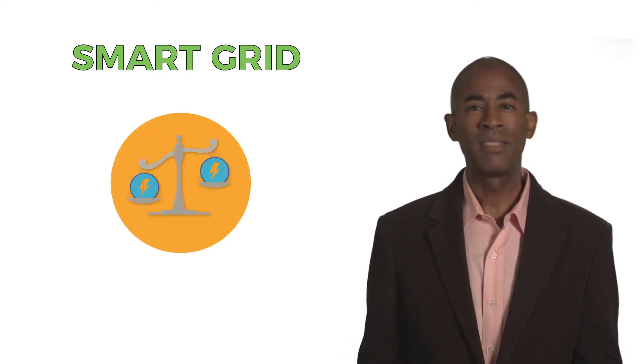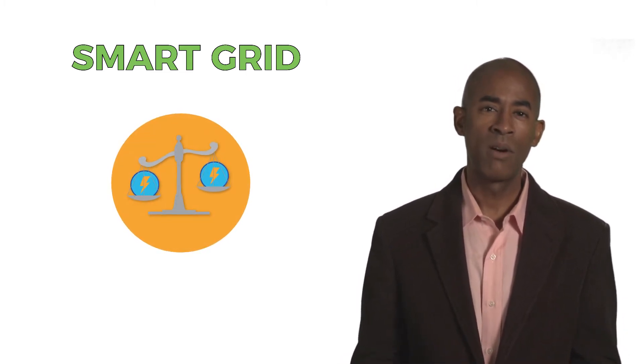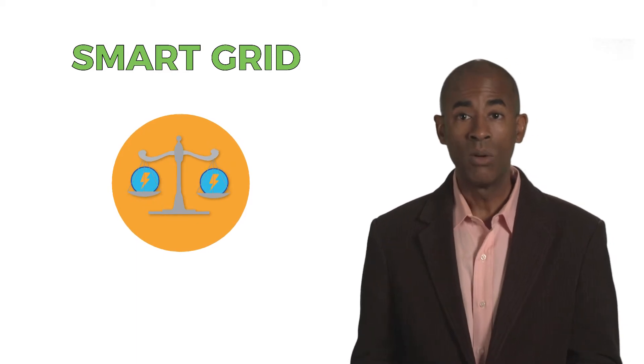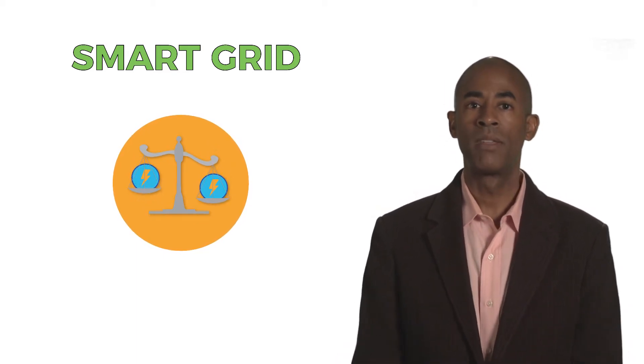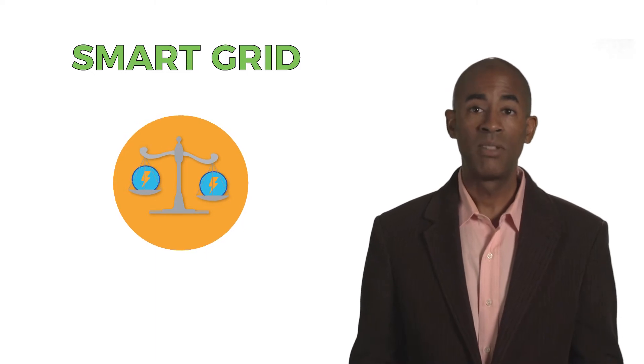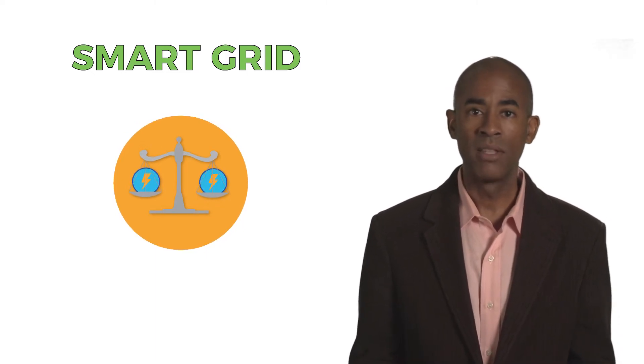It's a complex balancing act because the total amount of power on the grid needs to equal the total usage of power at any given time. The smart grid keeps the two sides of this equation in balance. This prevents outages or oversupply.